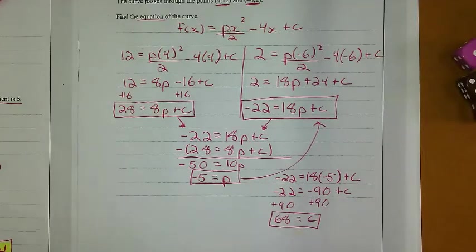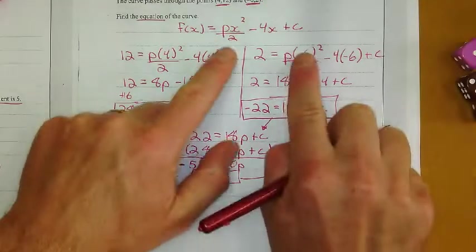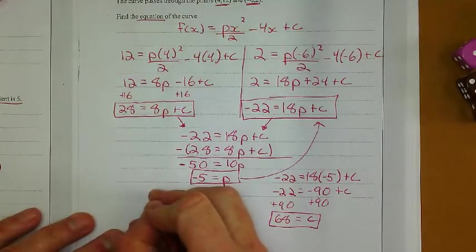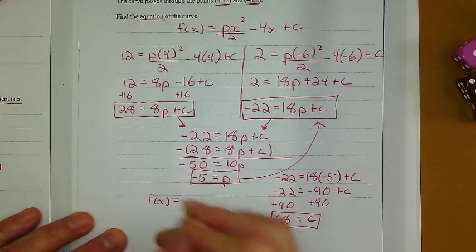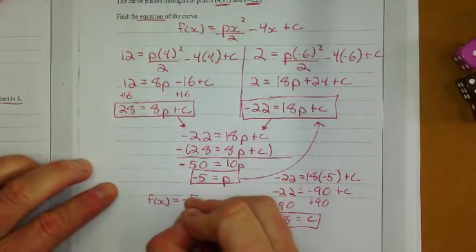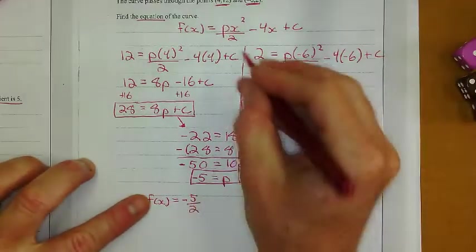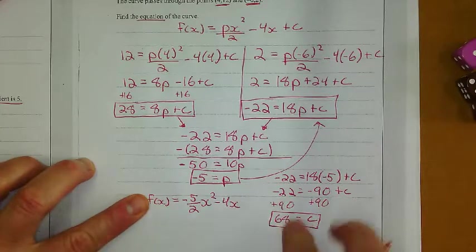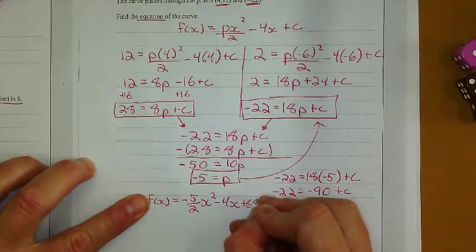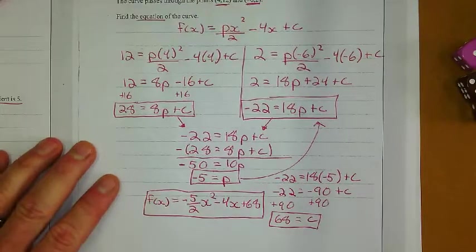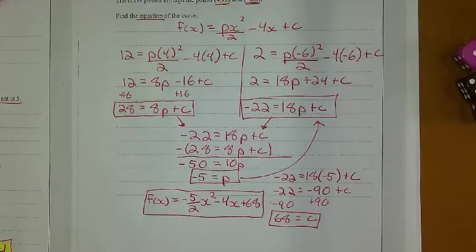So I can substitute those two values into this original one right here. I get my original equation must be f of x equals negative 5 halves x squared minus 4x plus that constant of integration of 68. And that is my answer. That is a doable problem. That's pretty cool. I'm happy with that one.